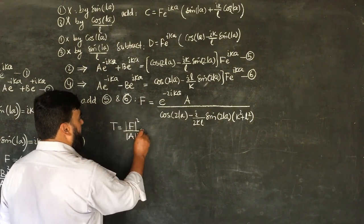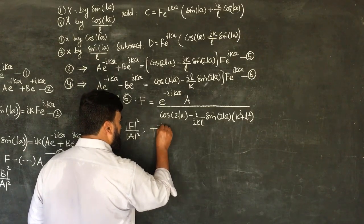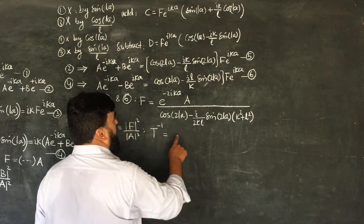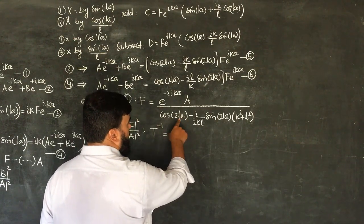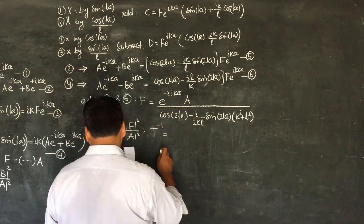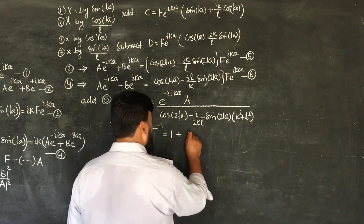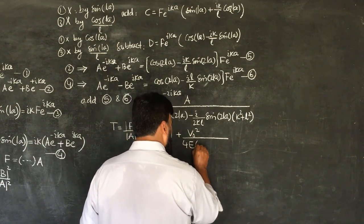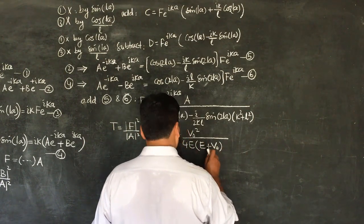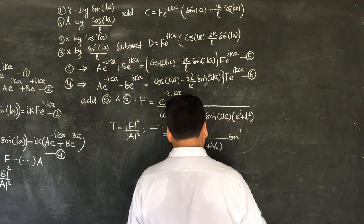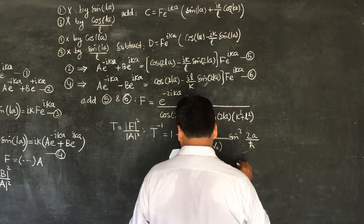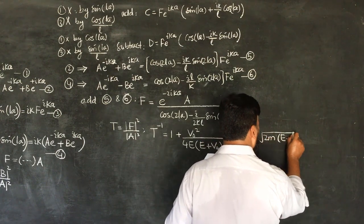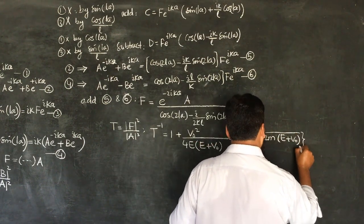The transmission T is |F|²/|A|². So the inverse T⁻¹, meaning |A|²/|F|², after some simplification and substituting the values of L and K, becomes: T⁻¹ = 1 + [V₀²/(4E(E + V₀))]·sin²[(2a/ℏ)√(2m(E + V₀))].